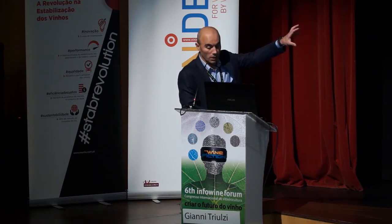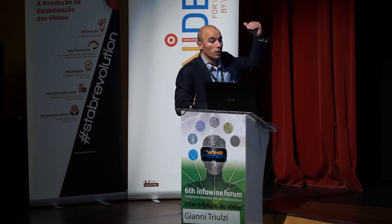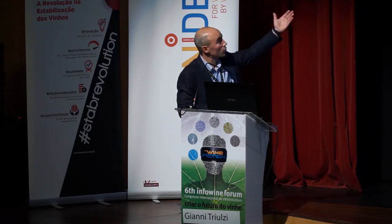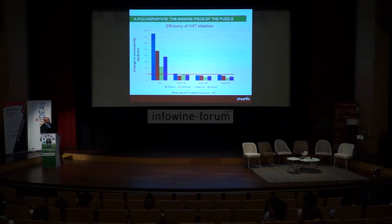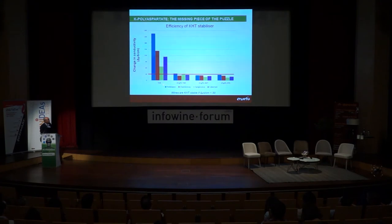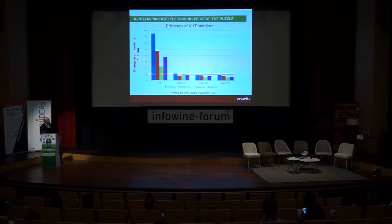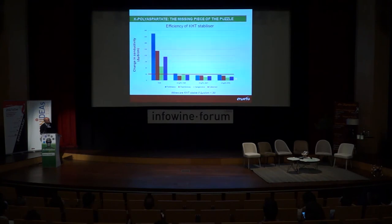I want to go a bit more into detail. Let's see together how efficient this compound is. These are trials we did with potassium polyaspartate on different wines — two white wines and two reds — comparing potassium polyaspartate with carboxymethylcellulose and metatartaric acid. Starting from different levels of instability, histograms above the red line indicate the wines are unstable. Below that line, all wines are now stable. Potassium polyaspartate is efficient — I would say a bit more than CMC, comparable to metatartaric.